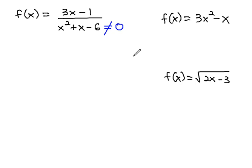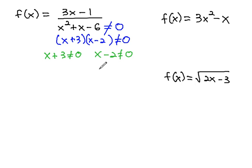So let's find out what values would make the denominator zero, and those would be the values that are not allowed to be part of the domain. We can quickly solve this by factoring: (x plus 3) times (x minus 2) is not equal to zero, and then set each factor not equal to zero. x plus 3 is not equal to zero, and x minus 2 is not equal to zero. Solve quickly by subtracting 3, and we find x is not equal to negative 3. Add 2 to find that x is not equal to 2.